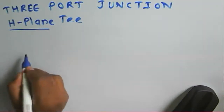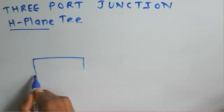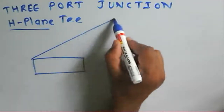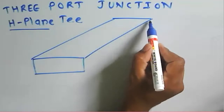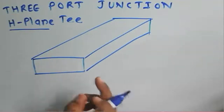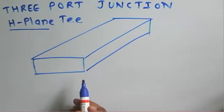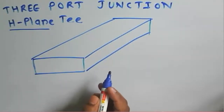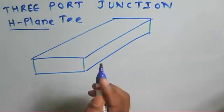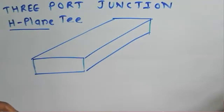For the H-plane T, consider a rectangular waveguide. If we have a T-junction or an arm present in the H-plane, then it is called an H-plane T. If that junction is present in the E-plane, then it is called an E-plane junction.